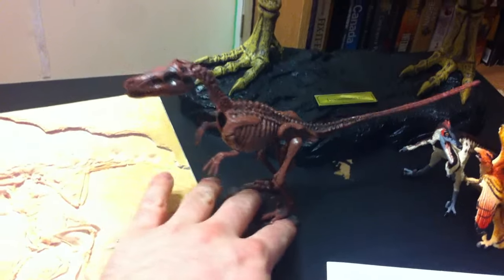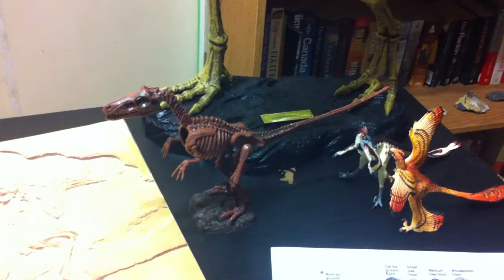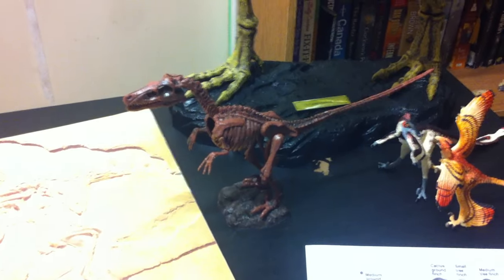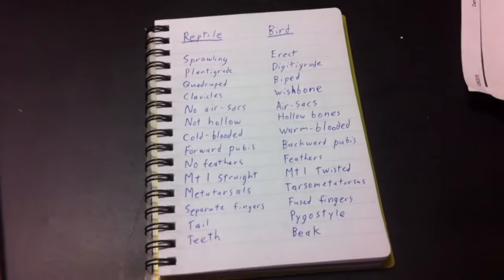So, now we have these things like Velociraptor and Deinonychus, which is actually what the Jurassic Park Velociraptors were based on, that we call reptiles. So, now, what do we have for birds?